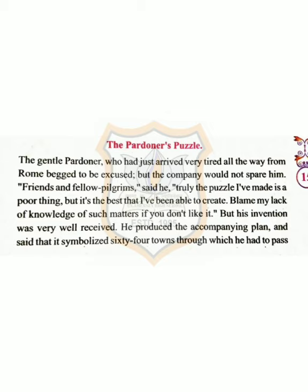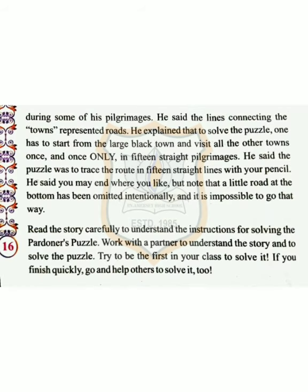'Friends and fellow pilgrims,' said he, 'truly the puzzle I've made is a poor thing, but it's the best that I've been able to create. Blame my lack of knowledge of such matters if you don't like it.' But this invention was very well received. He produced the accompanying plan and said that it symbolized 64 towns through which he had to pass during some of his pilgrimage. He said the lines connecting the towns represent roads.